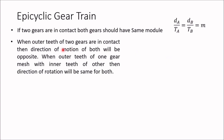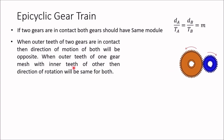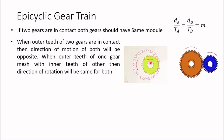Second, when the outer teeth of two gears are in contact, the direction of rotation of both will be opposite. So if one gear rotates clockwise, the other rotates anti-clockwise. When the outer teeth of one gear mesh with the inner teeth of another — as with a planet gear meshing with a ring gear — the direction of rotation will be the same for both. Here, the planet gear rotates anti-clockwise and the ring gear also rotates anti-clockwise.